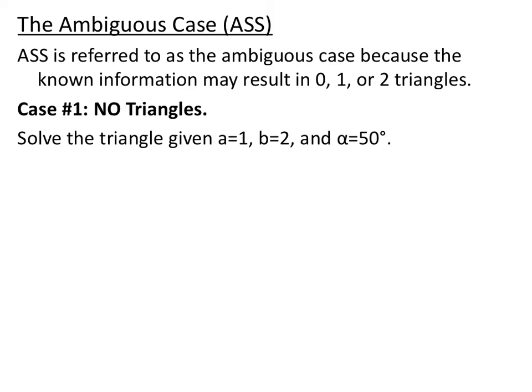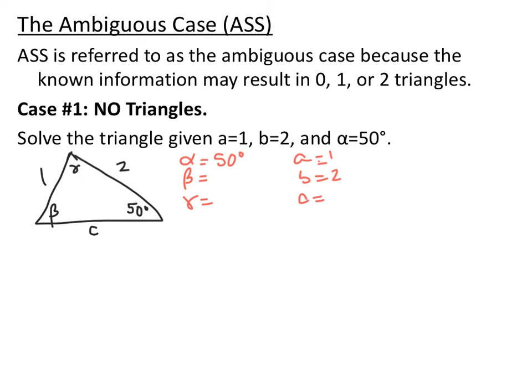In this first example, we want to solve a triangle with side lengths 1 and 2, and an angle of 50 degrees. Draw out a triangle that would match this description — make sure you have your angle of 50 degrees across from the side of length 1, and then next to that is side length 2. So now we have an angle-side-side triangle.